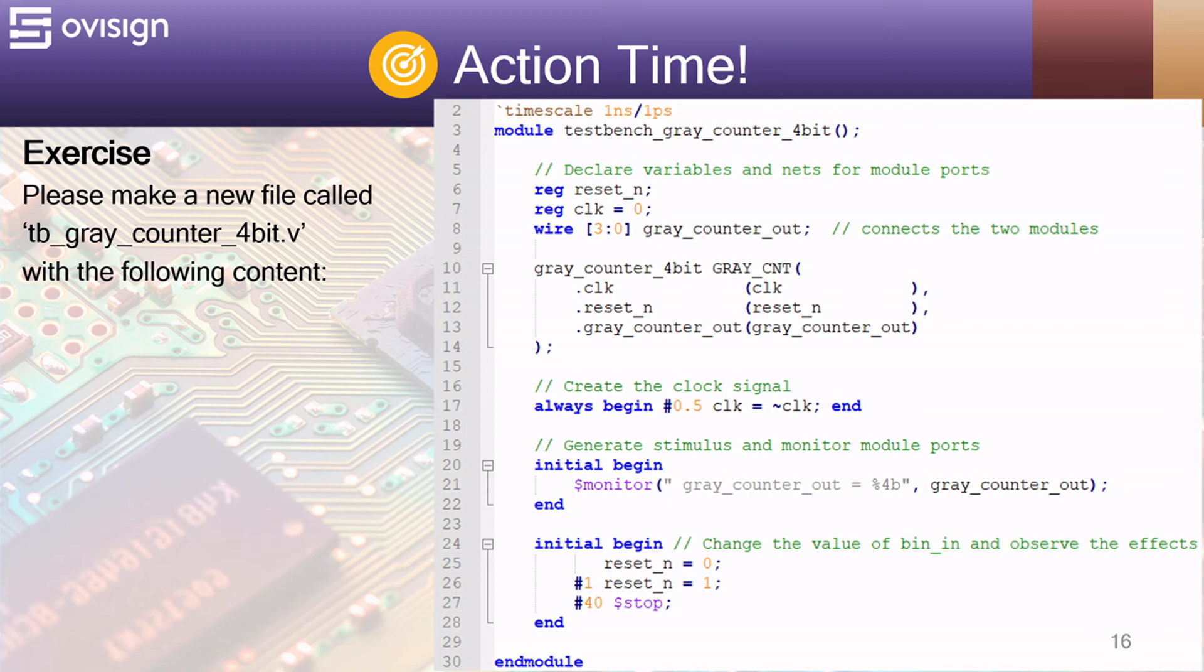At line 17 we create a 1 MHz clock signal. The procedure from line 20 is used to monitor the gray counter output and will print the variable whenever it changes.